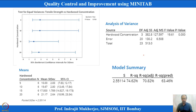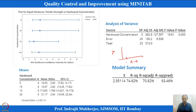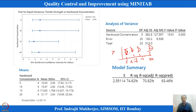Before running ANOVA in MINITAB, assumptions must be verified. One key assumption is whether variance is equal at different levels. With x at levels 5, 10, 15, and 20 percent, we expect variation in the 6 observations at each level. We need to check whether the standard deviations or variances at each level are the same or different, as this affects the ANOVA analysis.